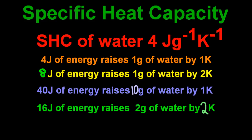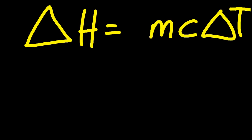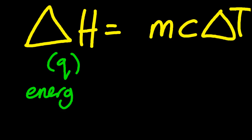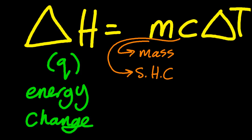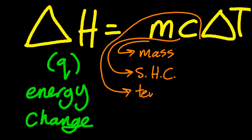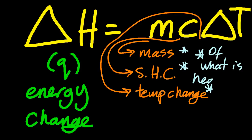There is an equation that will help you if you can't do it in your head, which is delta H equals MC delta T. We call it MCAT here. The IB says that delta H in this case is Q, which is the energy change — we prefer delta H. M is mass, C is specific heat capacity, and delta T is the temperature change. Don't fall for the trick here: this is all of what is being heated, not what is doing the heating — not of the fuel. It's of what's actually being heated.